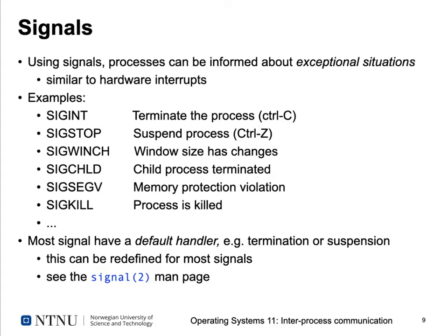Signals inform processes about exceptional situations. SIGINT is an interrupt signal sent when the user presses Ctrl+C — it requests termination, giving the process a chance to clean up, flush buffers, close files, and close communication channels before exiting. It doesn't immediately kill the process.